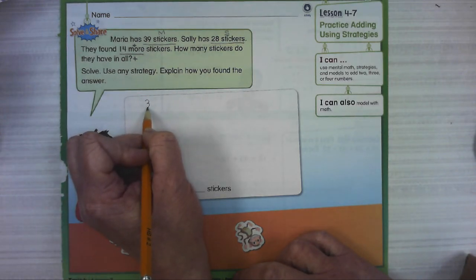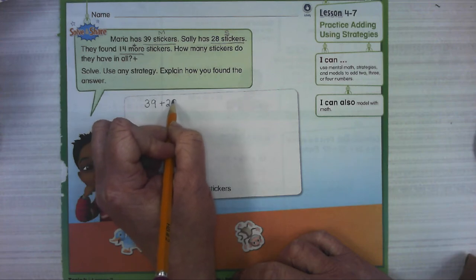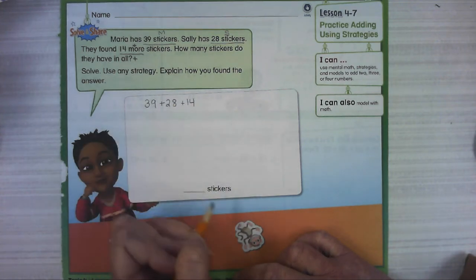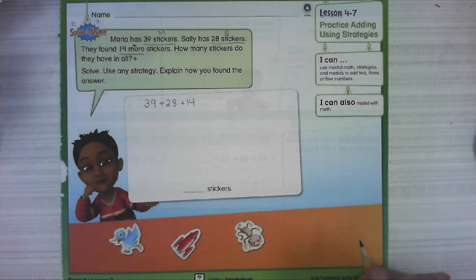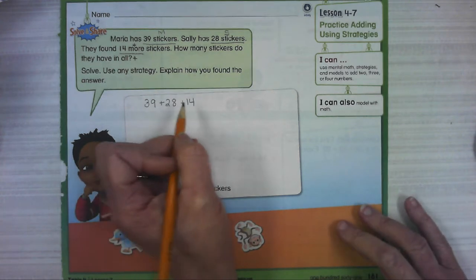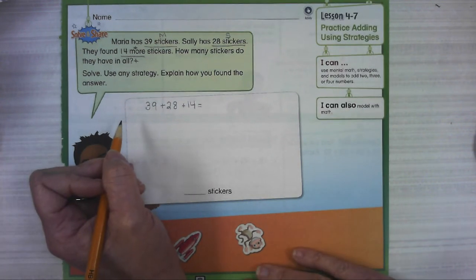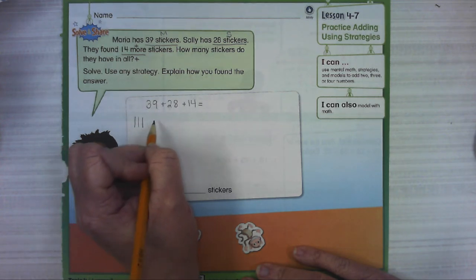So I'm going to take Maria's stickers and put them with Sally's stickers, and then I'm going to add the 14 more stickers that they found. If you would like to pause the video and work this out yourself, then you can hit play to see how I worked it, see if we got the same solution.